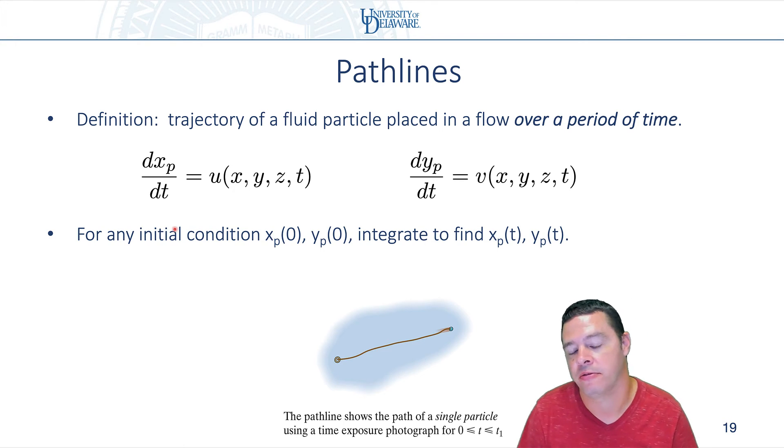For any initial condition, let's call it X_P(0) and Y_P(0). That's the initial position X and Y of a point in the flow. We just integrate these equations of motion to figure out how X and Y of an imagined particle change over time.